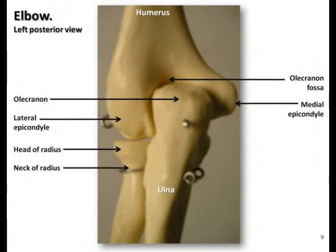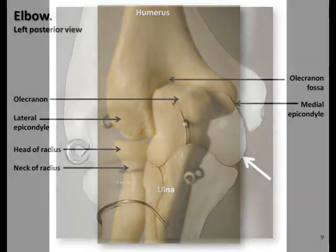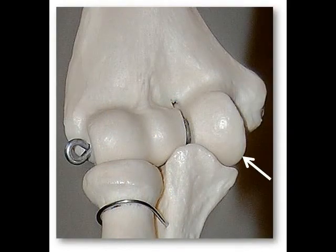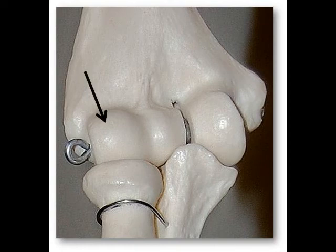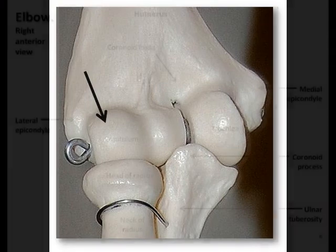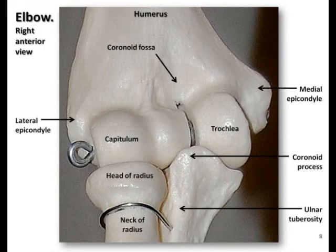The elbow joint is formed through an articulation between the humerus and the ulna and radius. The elbow joint has two points of articulation: one is where the trochlea of the humerus articulates with the trochlear notch of the ulna, and the other is where the round capitulum process of the humerus articulates with the head of the radius. The other articulations between the radius, ulna, and wrist will be reviewed in a future podcast on the joints.